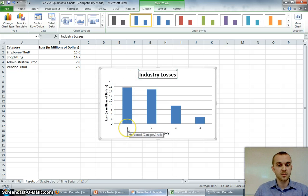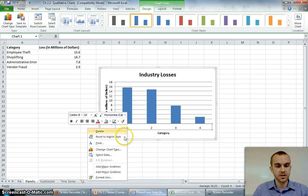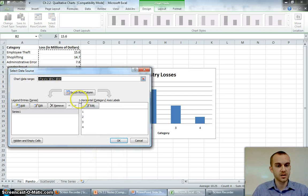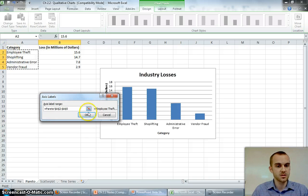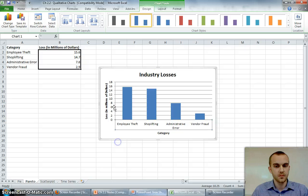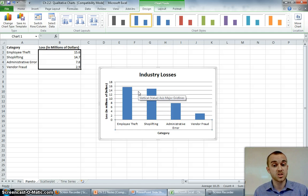Now, the last thing I want is to change my horizontal axis, so I right-click, I'm going to select my data. It's, again, that horizontal I need to change, and I just highlight my categories. And there I have each of my categories separated. So, what I could conclude is that the greatest amount of loss comes from employee theft, followed by shoplifting.